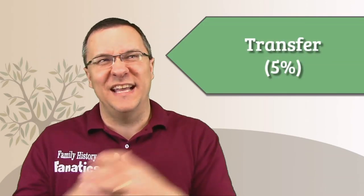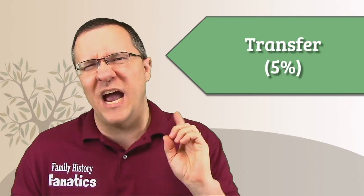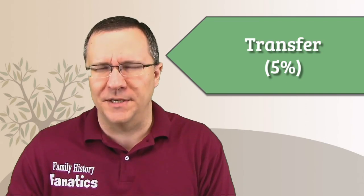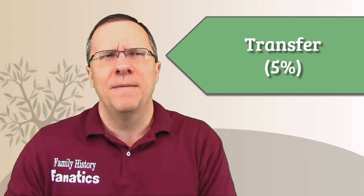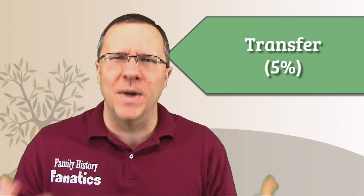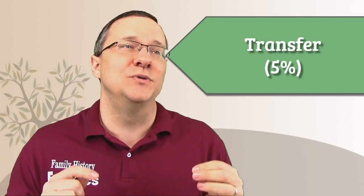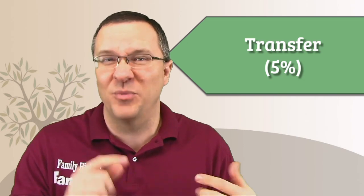The next category is the transfer category. This is actually one I was toying with taking out of the whole equation but I decided to leave it in for now because it is a great money saving opportunity. If you've tested at Ancestry and 23andMe, they don't allow transfers so the only way to get into those databases is to test with them. So you're paying for the regular cost of a DNA kit.